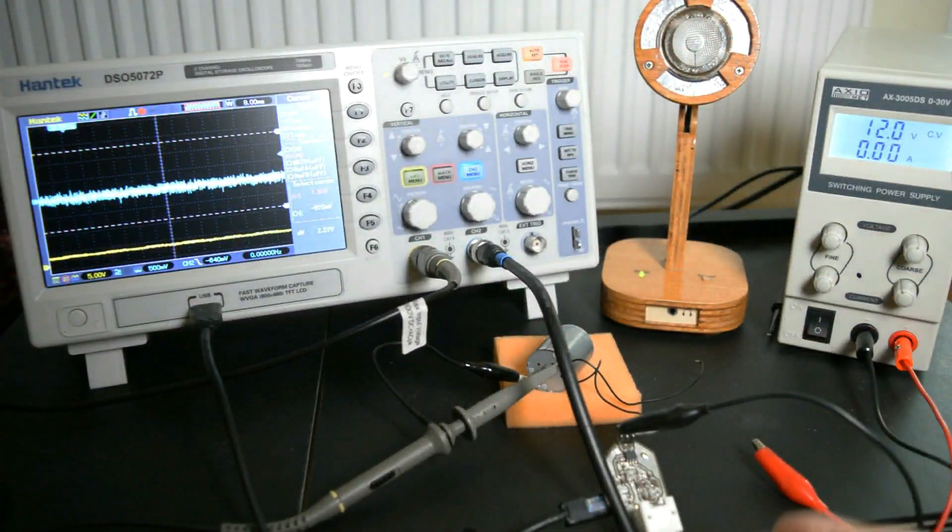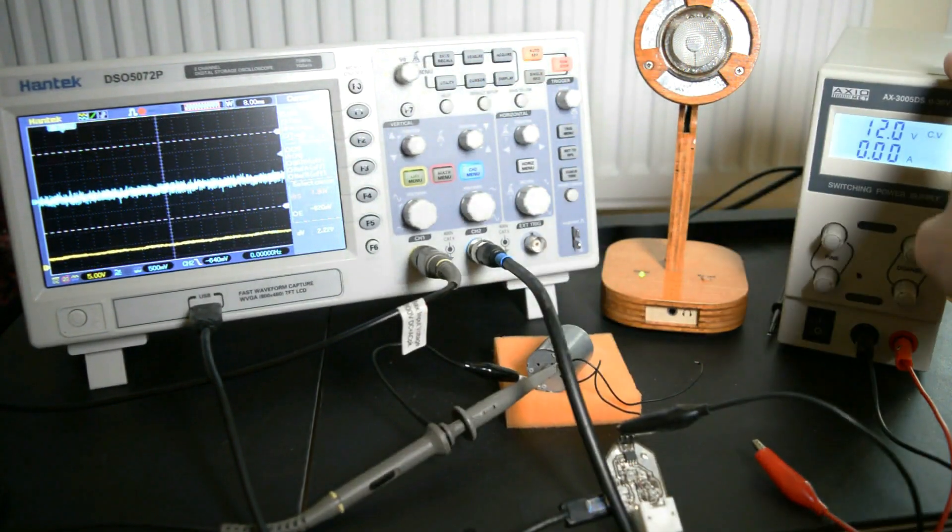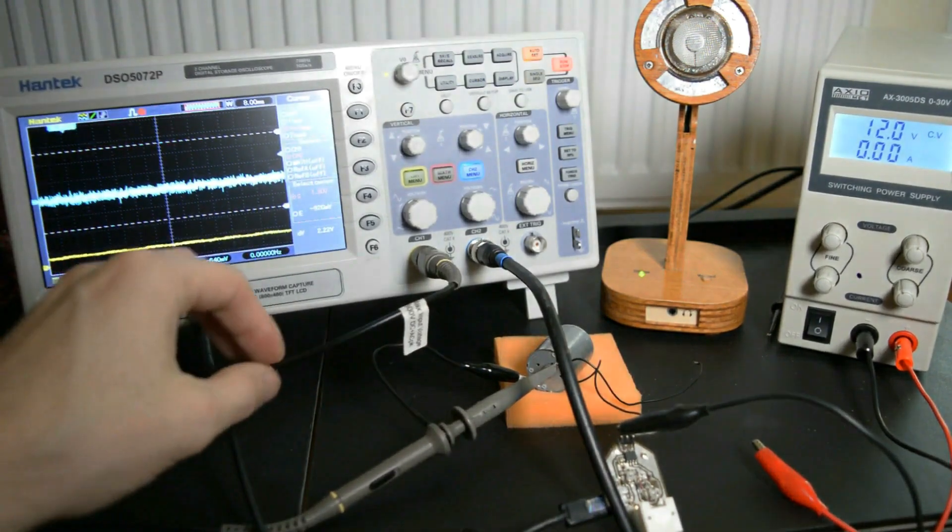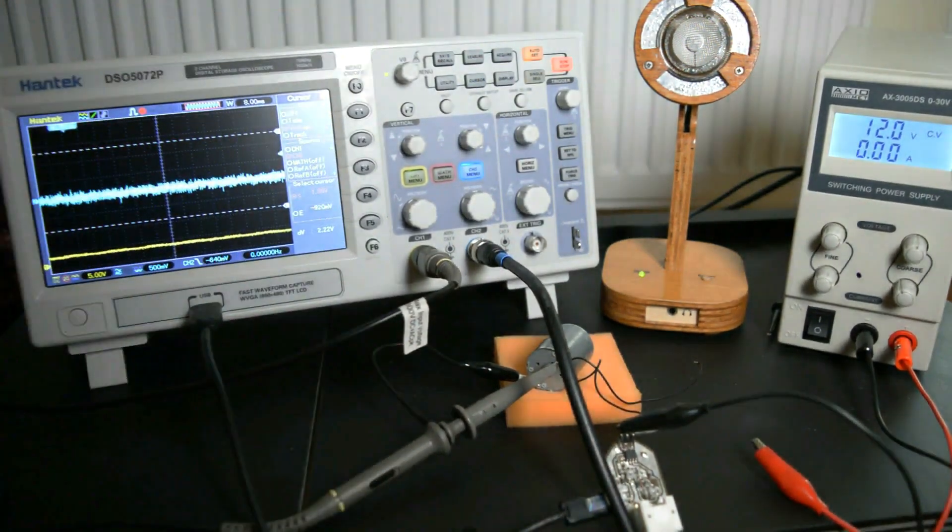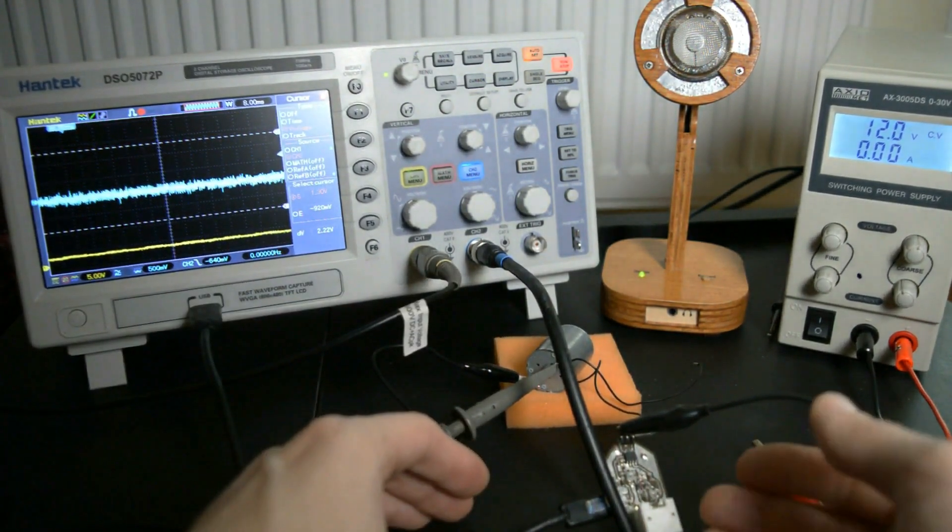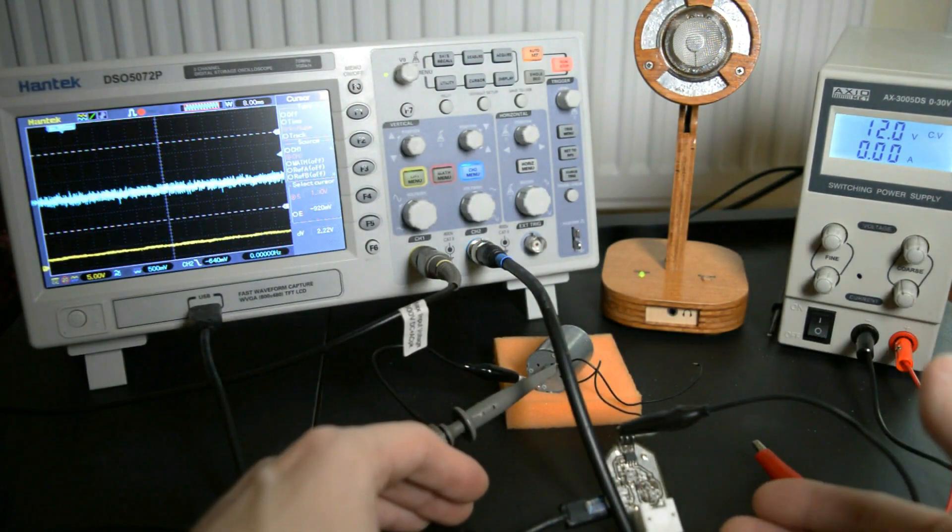So, first thing I want to test is the inrush current of my motor. So for that, I got this setup. I'm using a 12 volt power supply, and I got my oscilloscope setup on the first channel to test the input voltage, and on the second channel to test the current going through the motor. And for that, I'm actually going to use the current probe I built in my very first video.